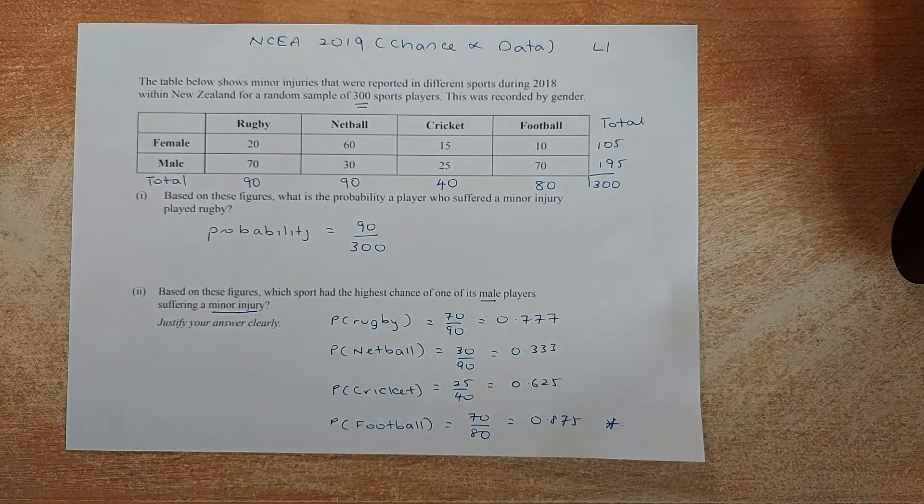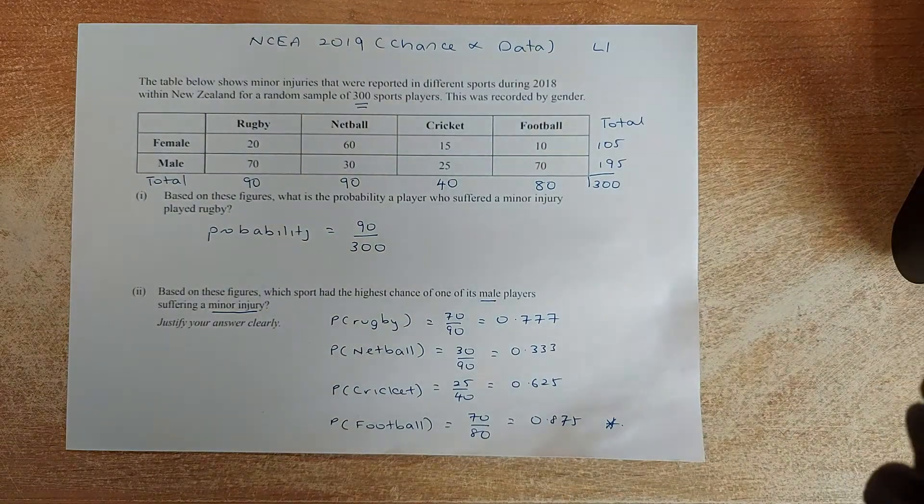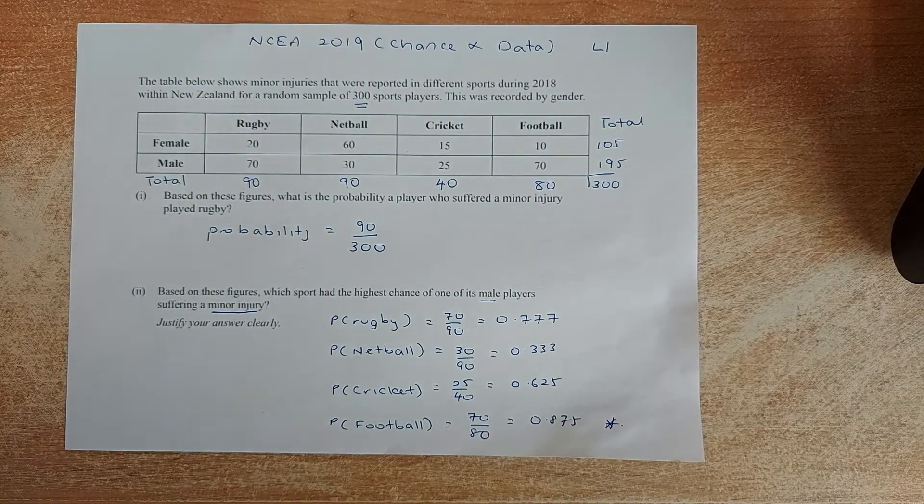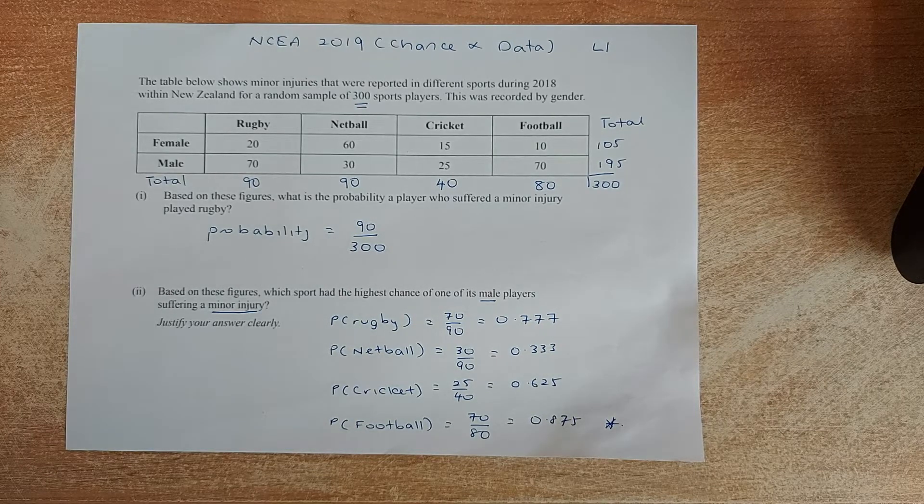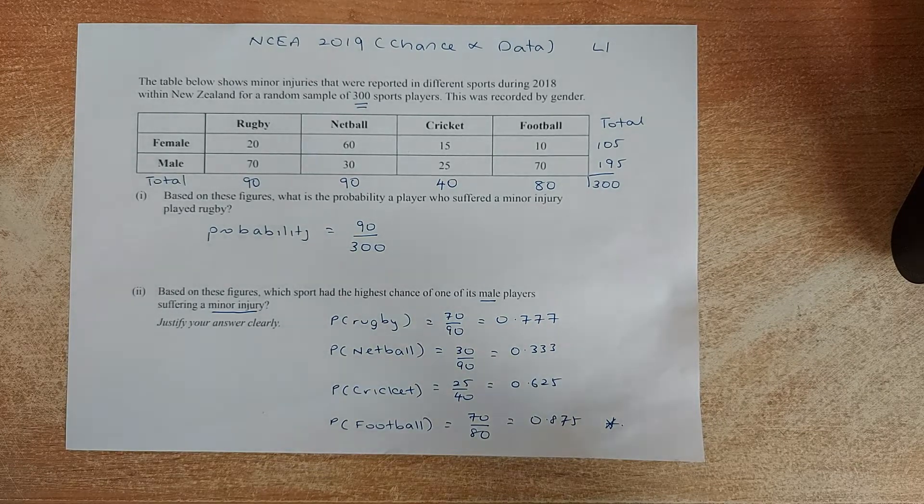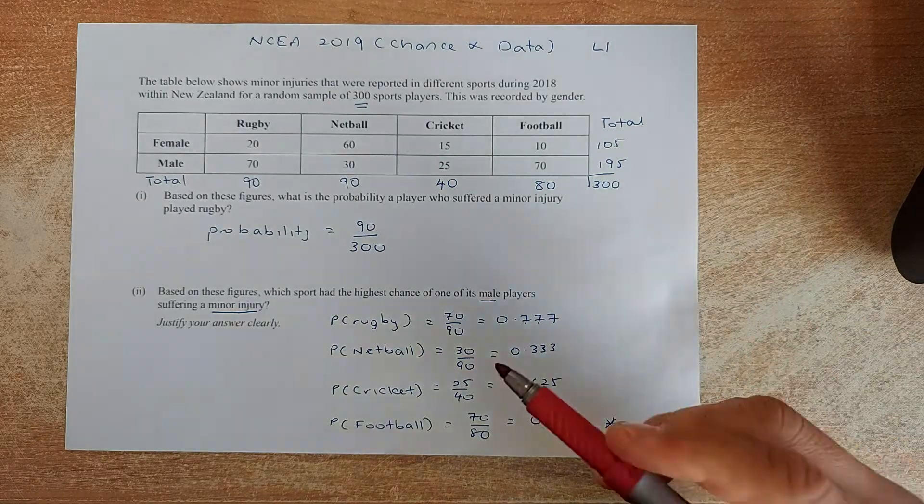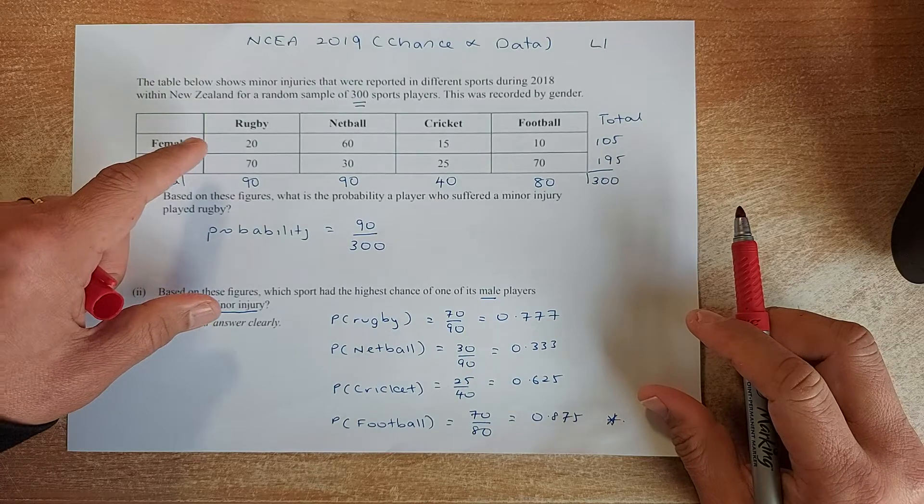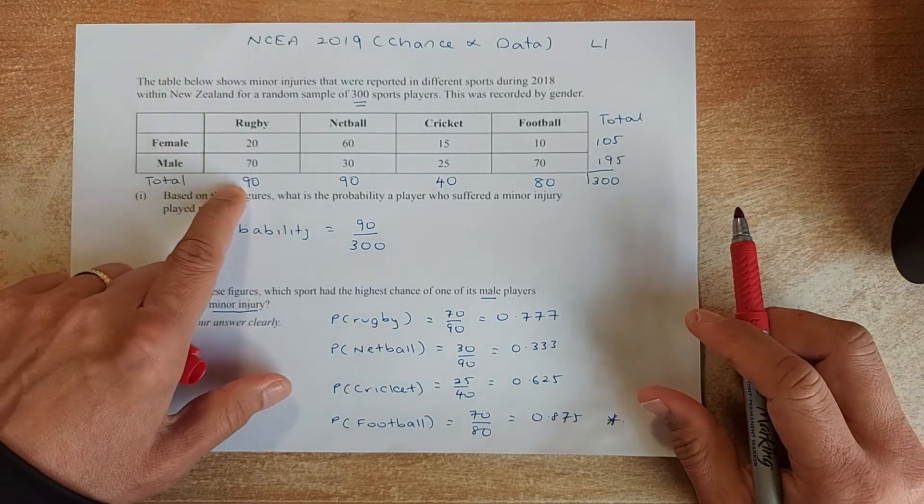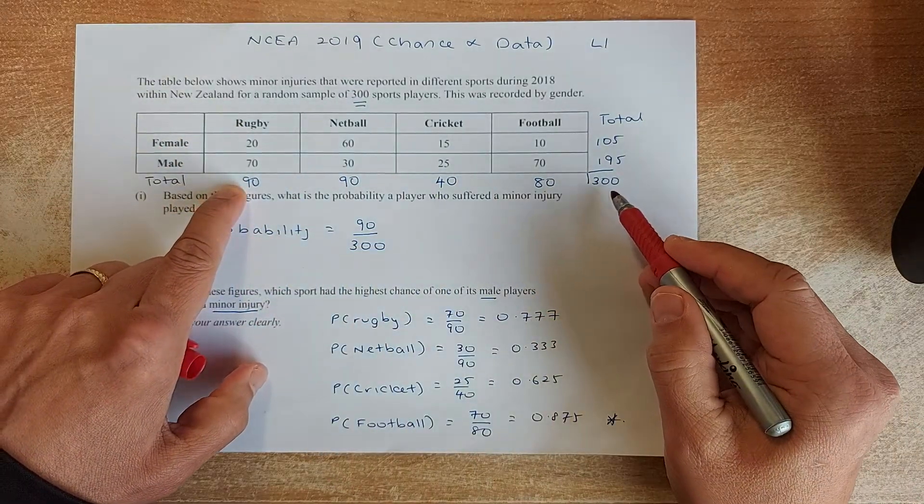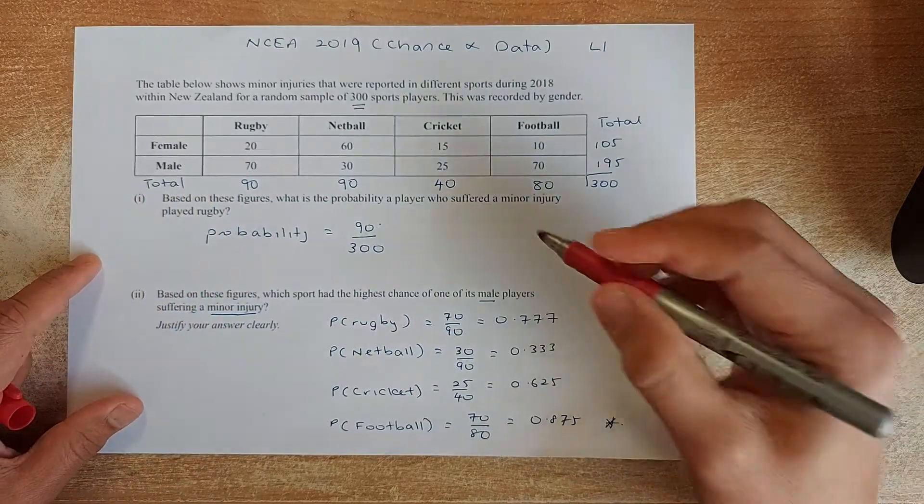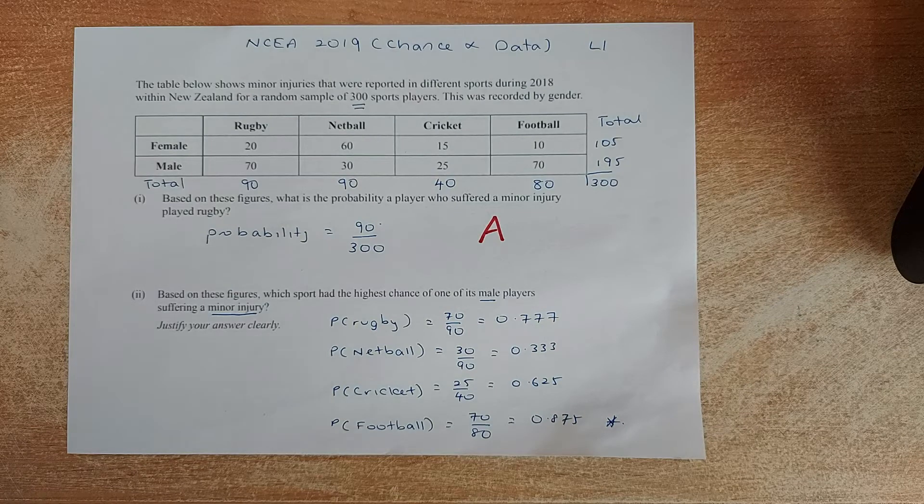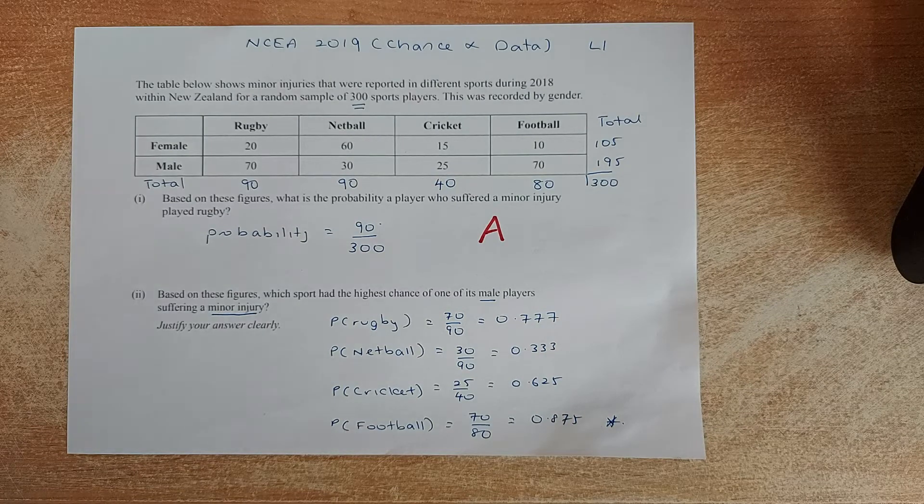So the first question is very straightforward. The question says, based on the figure, what is the probability that a player suffered a minor injury playing rugby? So a minor injury playing rugby is rugby here. So it's going to be rugby is 90, 90 out of the total. So it's going to be 90 out of 300. You can put in there. That will give you an achieve in NCEA level 1 chance and data. Not too bad, right?